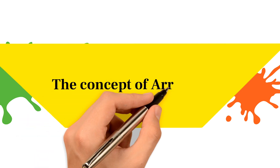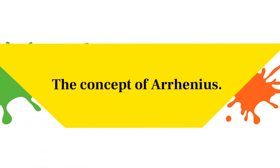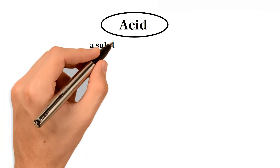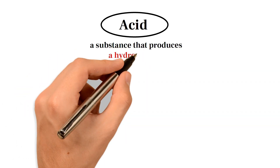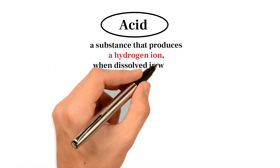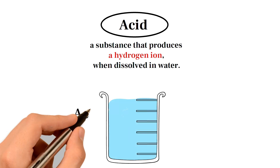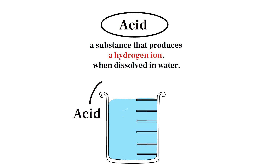Let's first get acquainted with Arrhenius' concept of acid and base. Arrhenius defines acid as a substance that produces a hydrogen ion when dissolved in water. Thus, the Arrhenius definition stipulates that the acid must contain an ionizable hydrogen atom in its structure, and it should be dissolved in water.